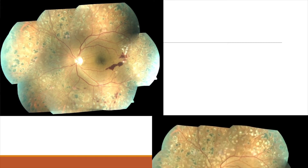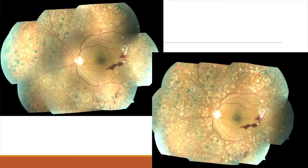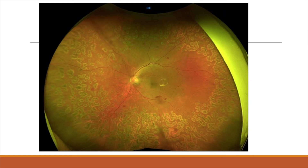Case example: PRP was done in three sittings. On review after three months, there was an inferior subhyaloid hemorrhage, and skip areas were seen superiorly and temporally and within scar marks, so additional laser marks were added. Another patient, post three sessions of PRP, on follow-up showed inferotemporal NVE with skip areas in the superior and temporal quadrant, which were filled in.